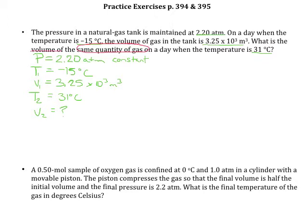The easiest way to do problems like this is to use the ideal gas law instead of trying to remember a bunch of individual laws. I use the ideal gas law twice and essentially set up a proportion divided by itself: P1V1 = N1RT1 divided by P2V2 = N2RT2. Notice I'm not using R twice — R is the ideal gas constant, it's always going to be the same, so R divided by itself is just 1.